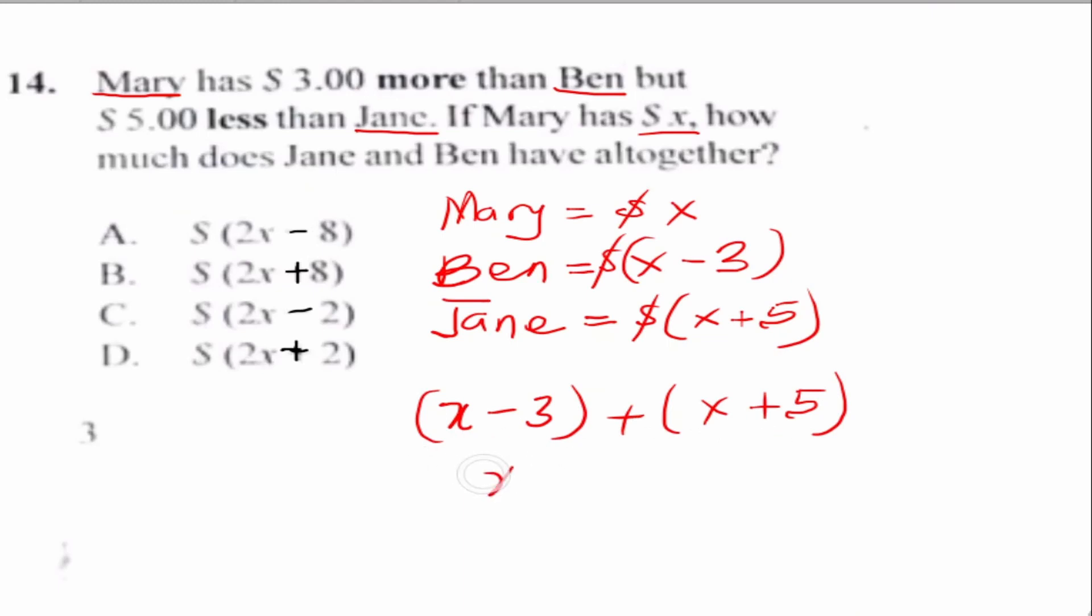So it means that you are going to have (x - 3) + (x + 5), and this is going to give us x + x - 3 + 5, which equals 2x + 2. And that is option D, the answer for this question.